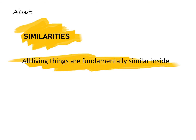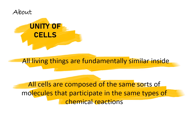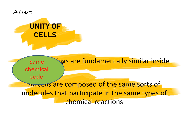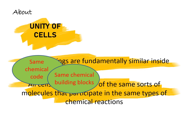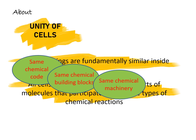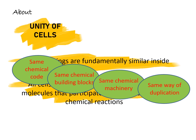Now let us know about the similarities between cells. All living things are fundamentally similar inside. All cells are composed of the same sorts of molecules that participate in the same types of chemical reactions. They have the same chemical code, same chemical building blocks, and same chemical machinery which helps in replication of the cell, and the same pattern of duplication.